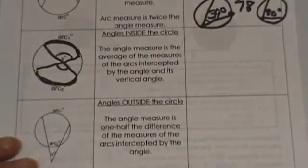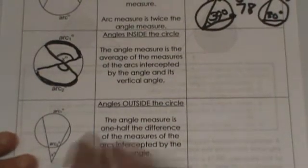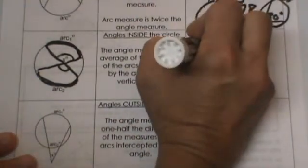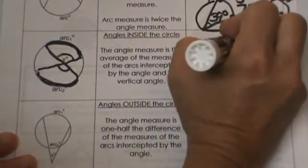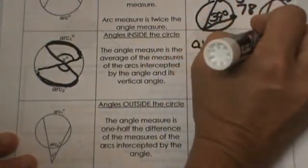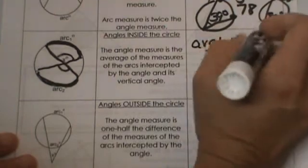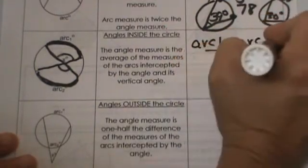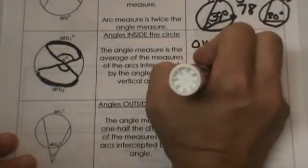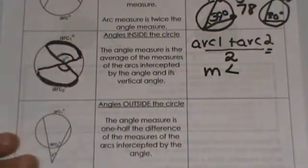What the rule says is we are going to average them. That means add and divide by 2. We are going to take arc 1 plus arc 2 and we are going to divide it by 2, and that is going to equal the measure of the angle in the center.